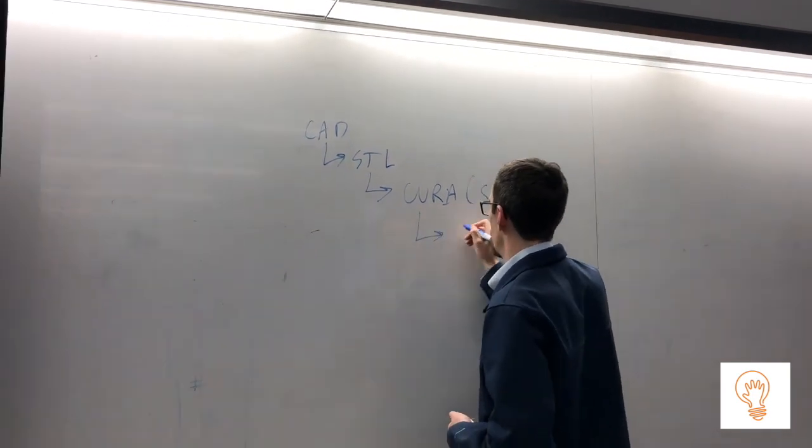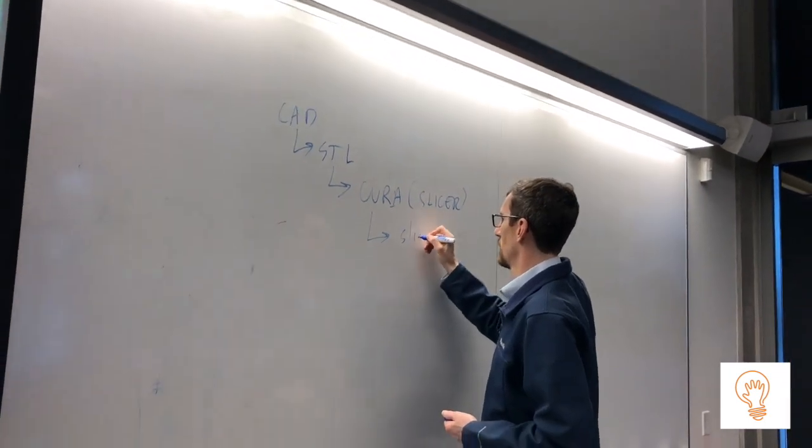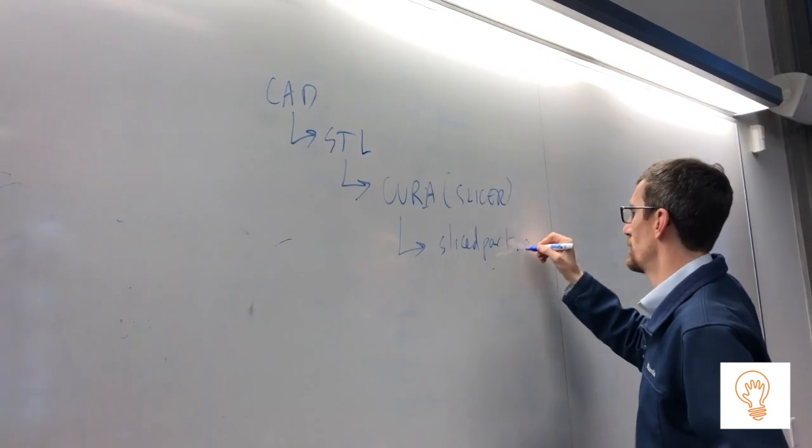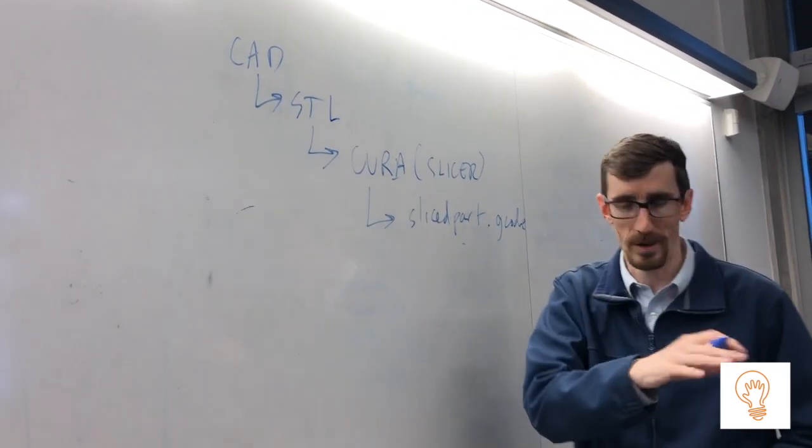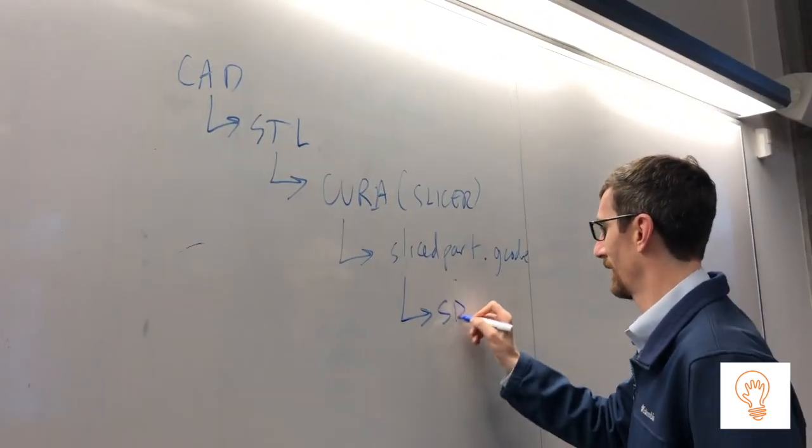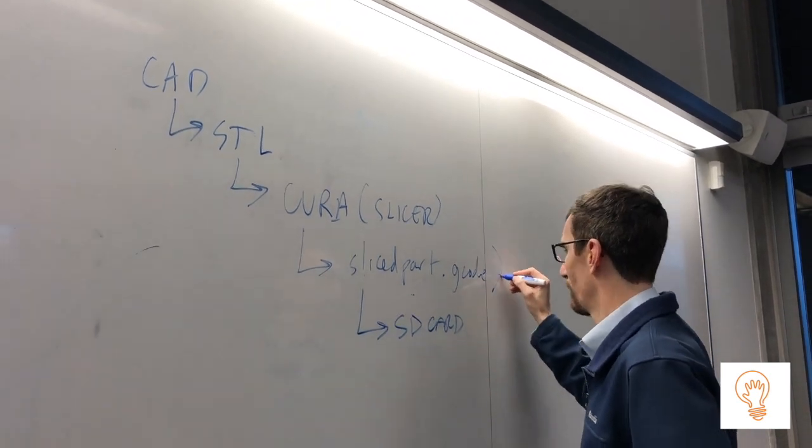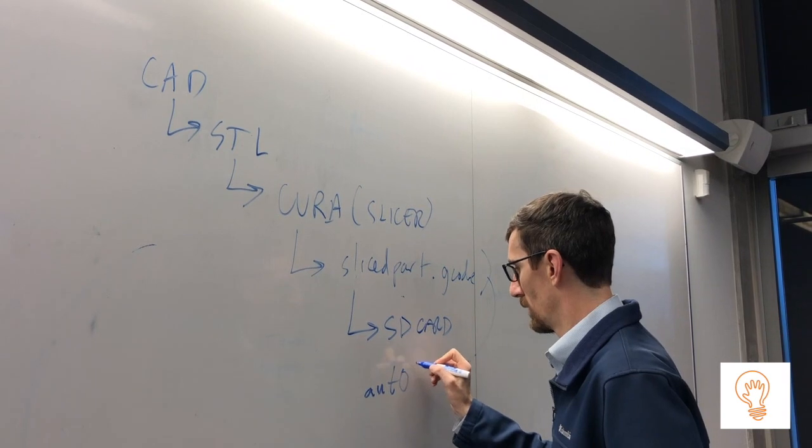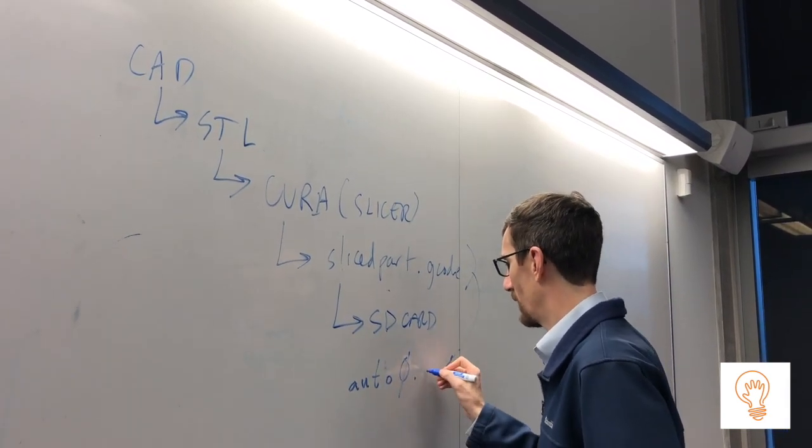That STL goes into Cura, which is your slicer, and then that outputs to G-code. So your sliced part is filename.gcode.